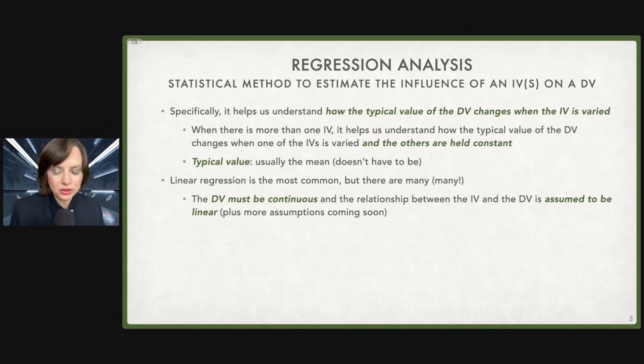Linear regression is the most common technique out there. It's the first one that you will learn. Almost always we learn linear regression first. The dependent variable must be continuous and the relationship between the independent variable and the dependent variable is assumed to be linear. There are a number of other assumptions that need to hold, but these are two big ones that are real easy to violate and if we violate them, our results may not make very much sense.